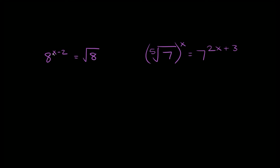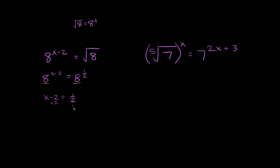Now let's talk about radicals. We have 8 raised to the x minus 2 is equal to the square root of 8. Taking the square root of a number is the exact same thing as raising it to the 1 half power. So the square root of 8 is 8 raised to the 1 half. That gives us 8 raised to the x minus 2 equals 8 raised to the 1 half. Setting exponents equal: x minus 2 equals 1 half. Adding 2 to both sides: x equals 2 and a half, which is 2.5.